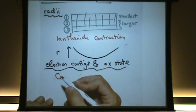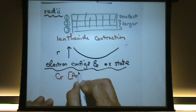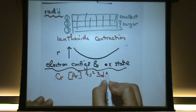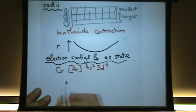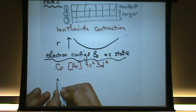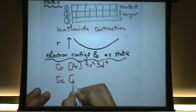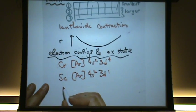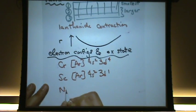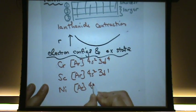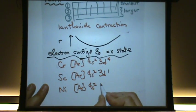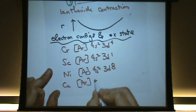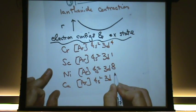Let's say we have chromium neutral. Well, that would be argon 4s2 3d4. I'm going to come back to that one in just a second. It has a little exception we're going to talk about. Let's try scandium. That would be argon 4s2 3d1. Let's try another one. Let's try nickel. That would be argon 4s2 3d8. And let's try copper. That would be argon 4s2 3d9.